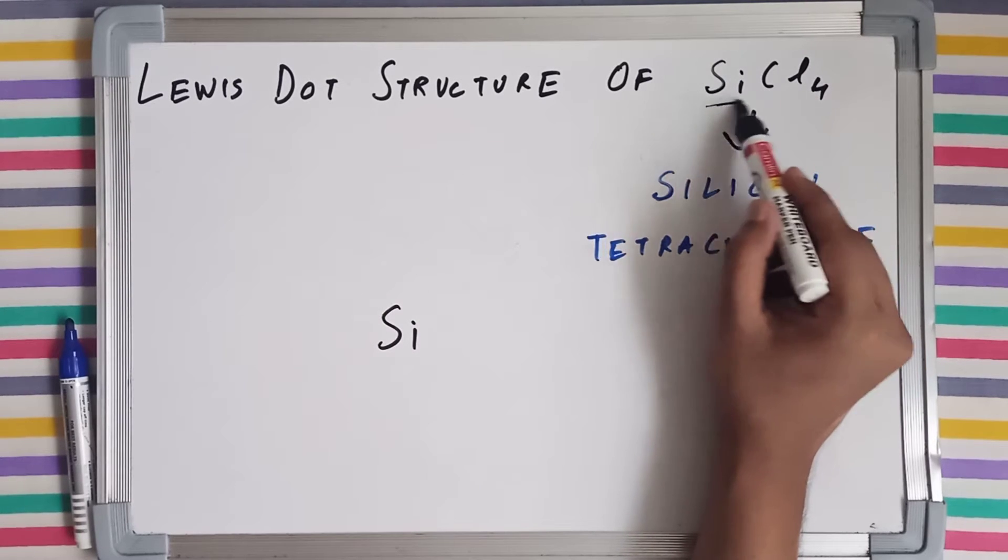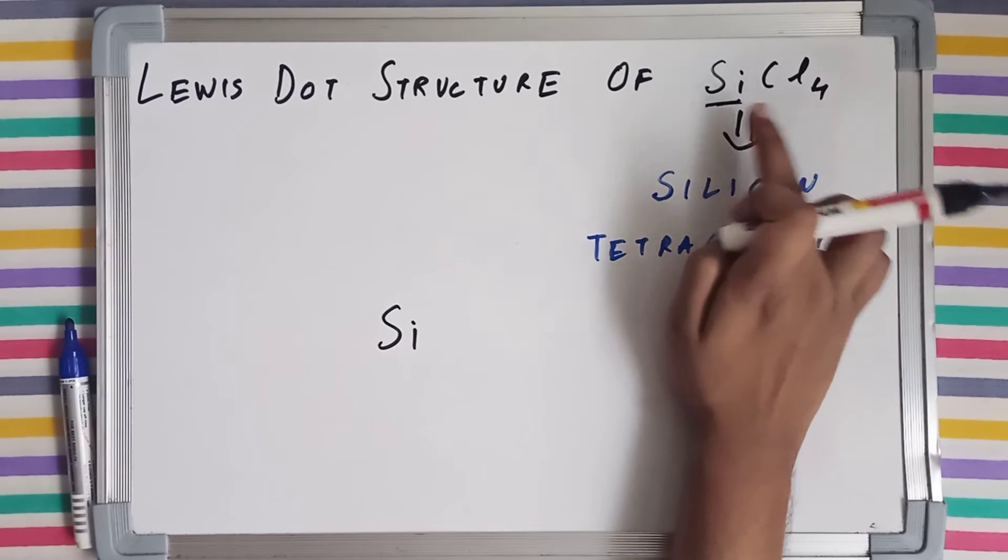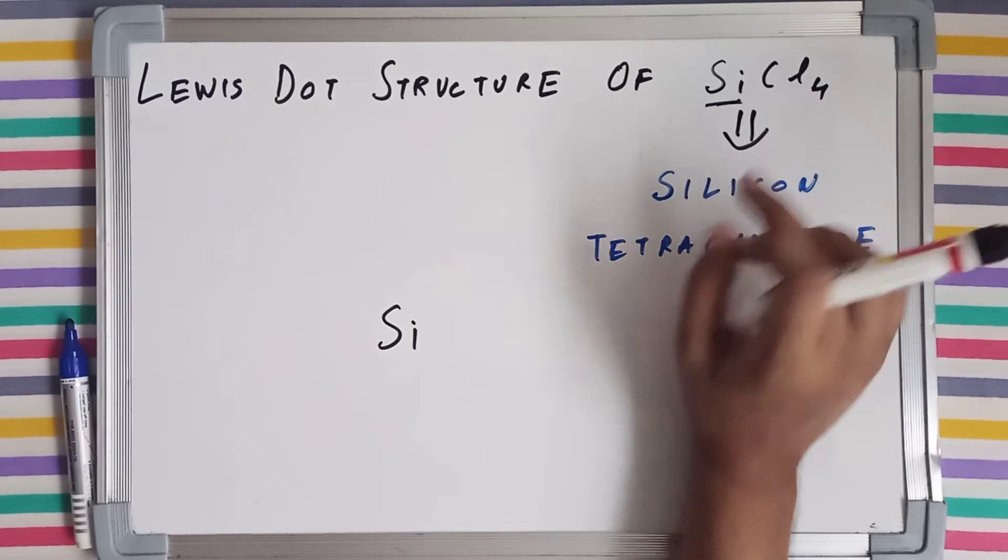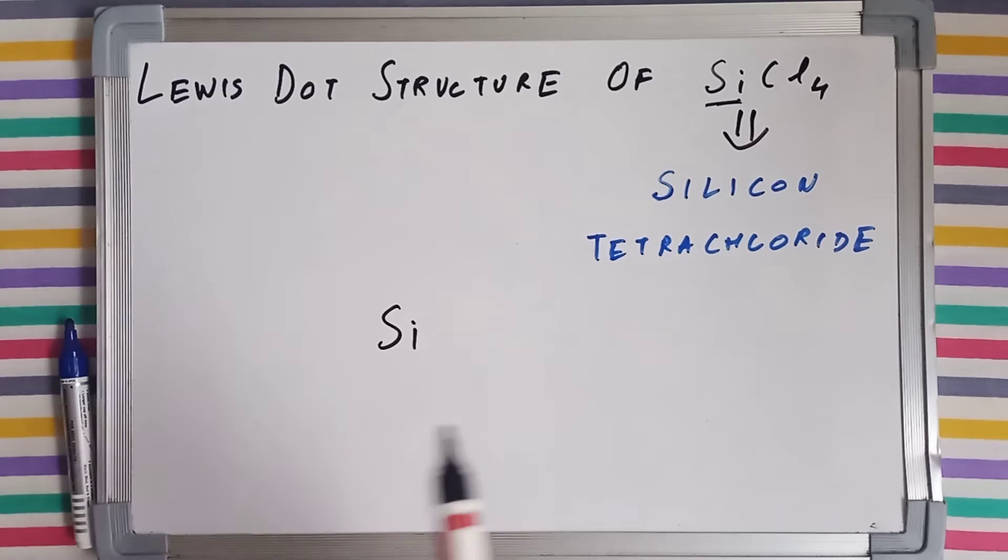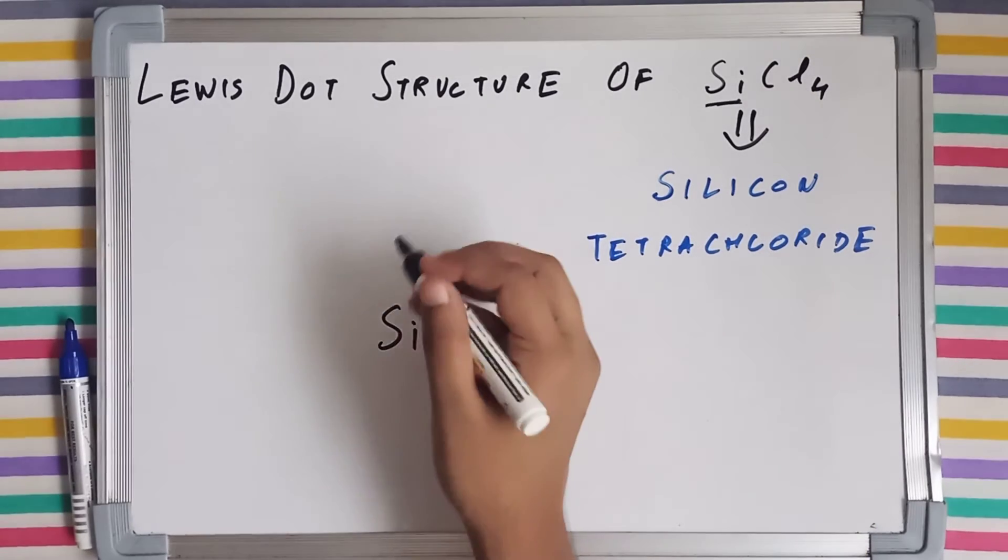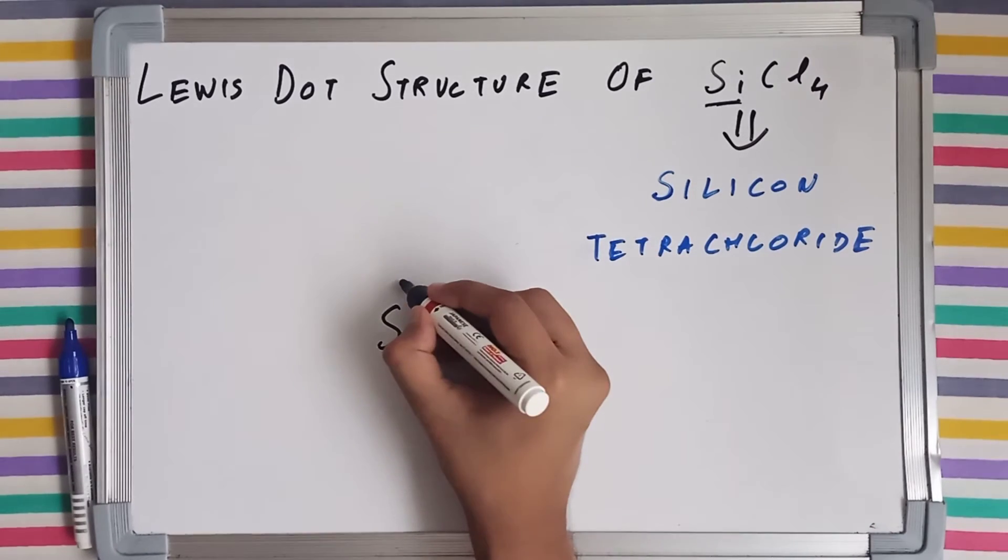And we have got four atoms of chlorine. Now silicon had four valence electrons or four unpaired electrons. Let's say one, two, three, four.